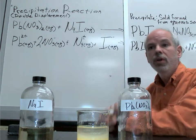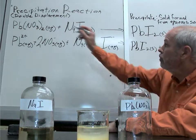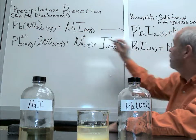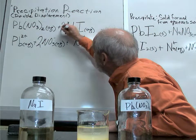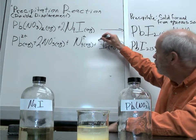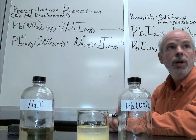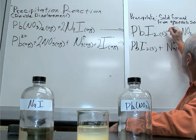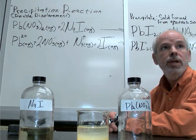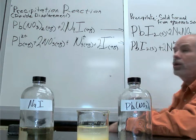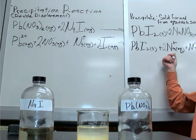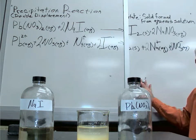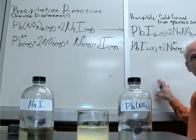Now, the final thing to do is to balance these equations. If we have one lead atom over here and one lead atom over here, they're balanced. If we have one iodide ion here and two there, we're going to have to have two of these to balance the iodide, and two of these when we write them as separate ions. The sodium — there are two sodium there — so we have to put a two there to get enough sodium, and a two down here to reflect two sodium ions. And we have two nitrate ions there.